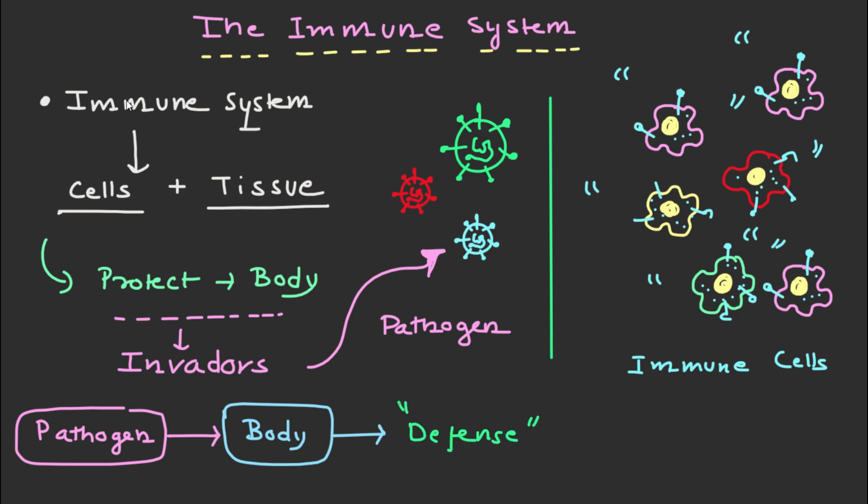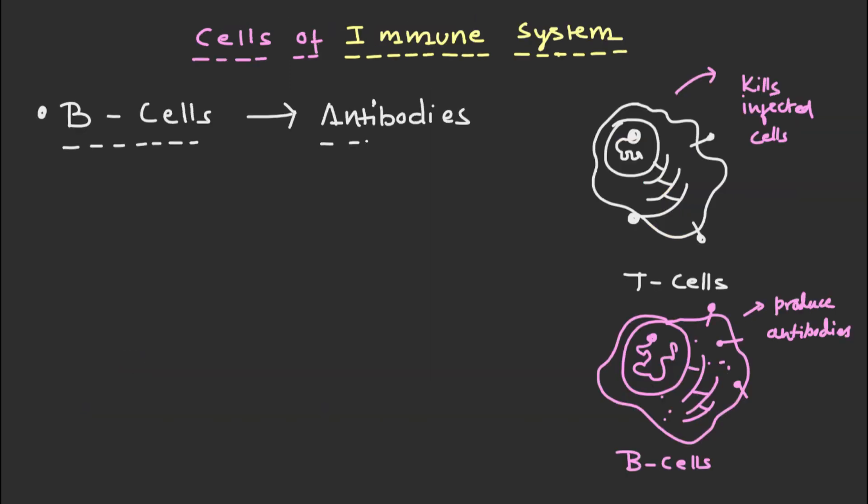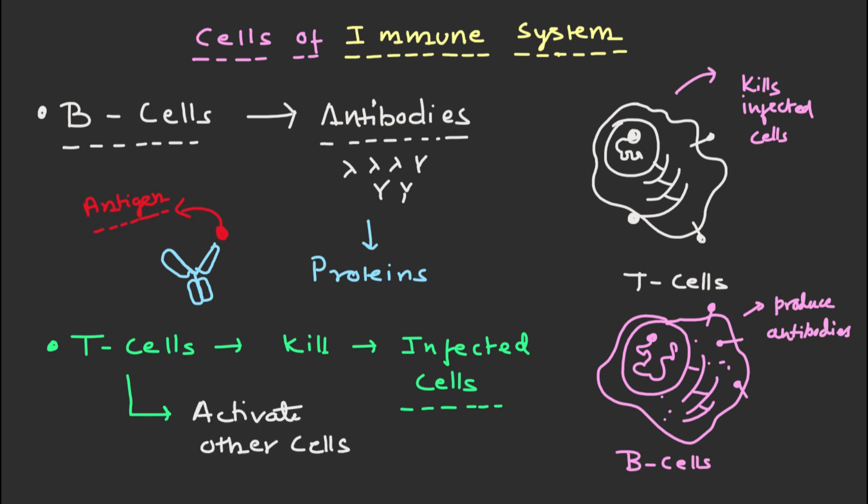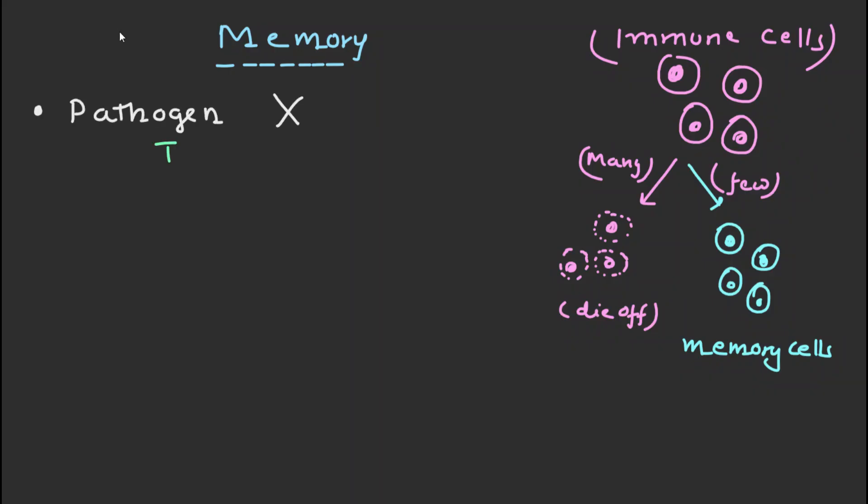B cells produce antibodies, which are proteins that can recognize and bind to specific antigens on the surface of the pathogen. T cells, on the other hand, can directly kill infected cells or help activate other immune cells. Once the pathogen is eliminated, most of the B cells and T cells die off.